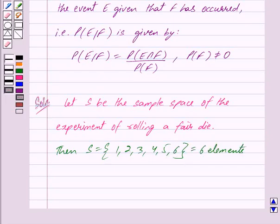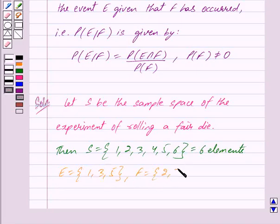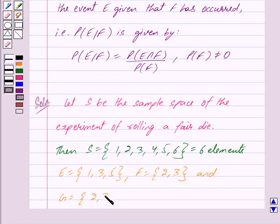Now, we are given that E is a set which consists of elements {1, 3, 5}, F consists of {2, 3}, and G consists of {2, 3, 4, 5}.